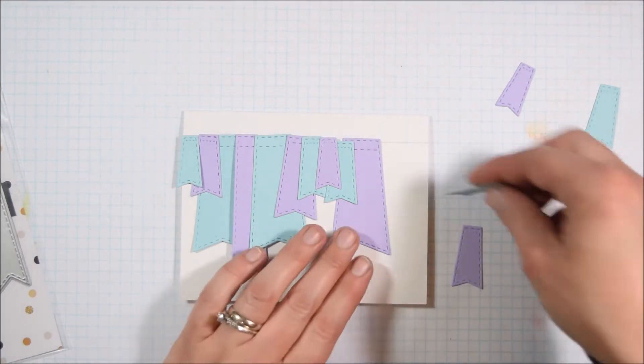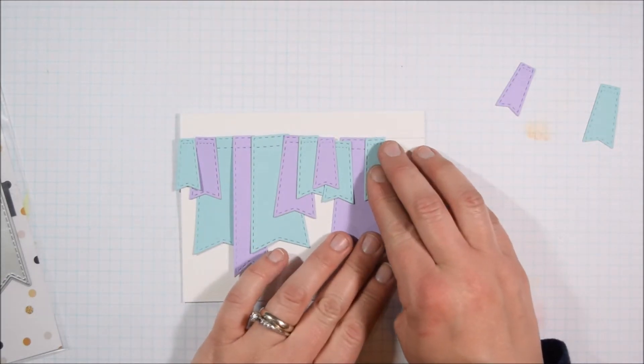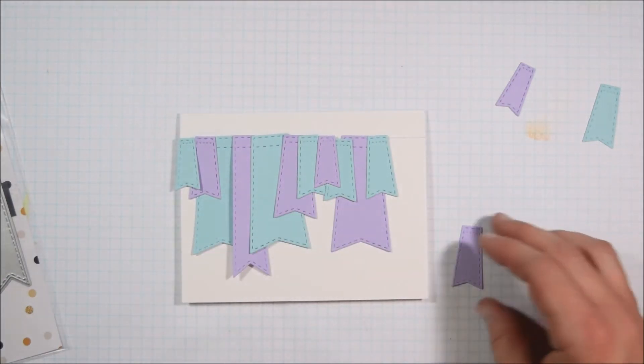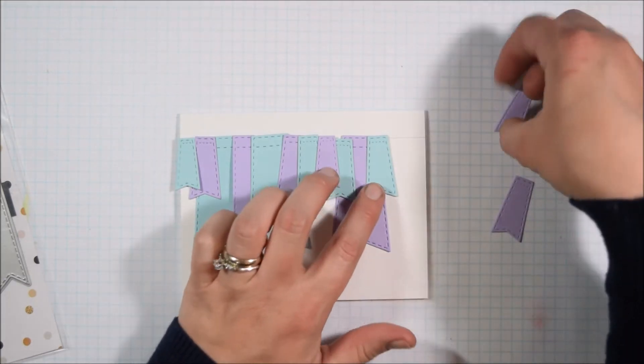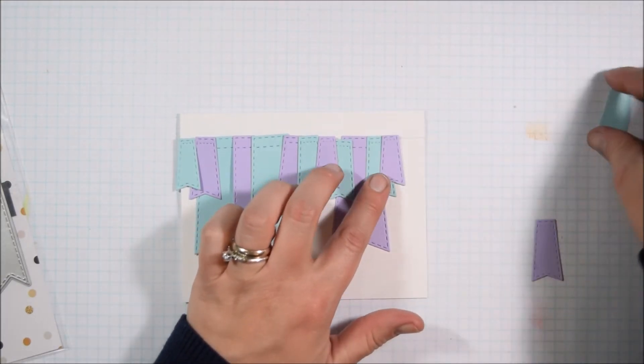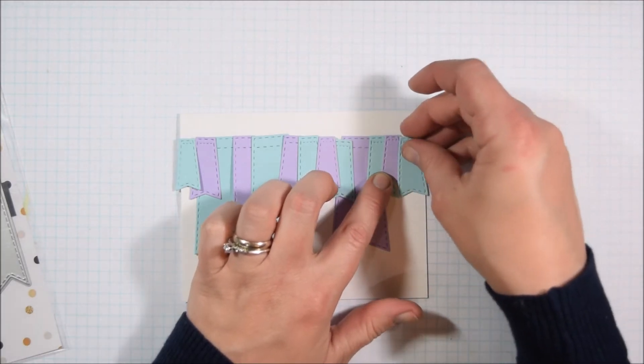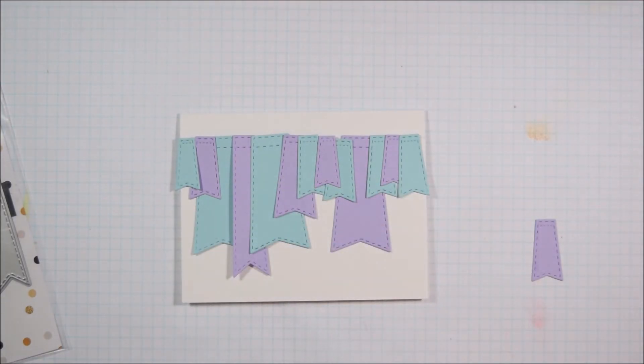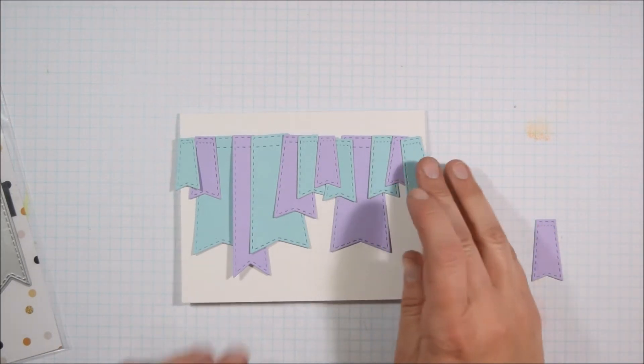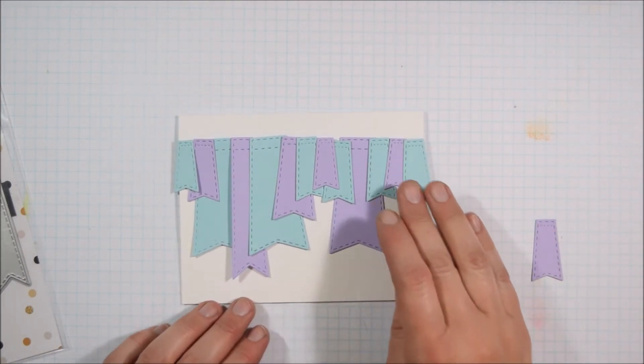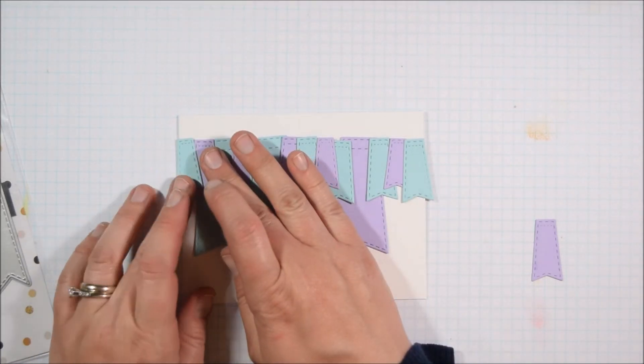I wasn't even sure if I had quite enough banners at this point or flags to cover all the way across the card, but like I said I was using up scraps so I was a bit limited. I'm also generally trying to go in a pattern of the blue then the purple, blue then purple.